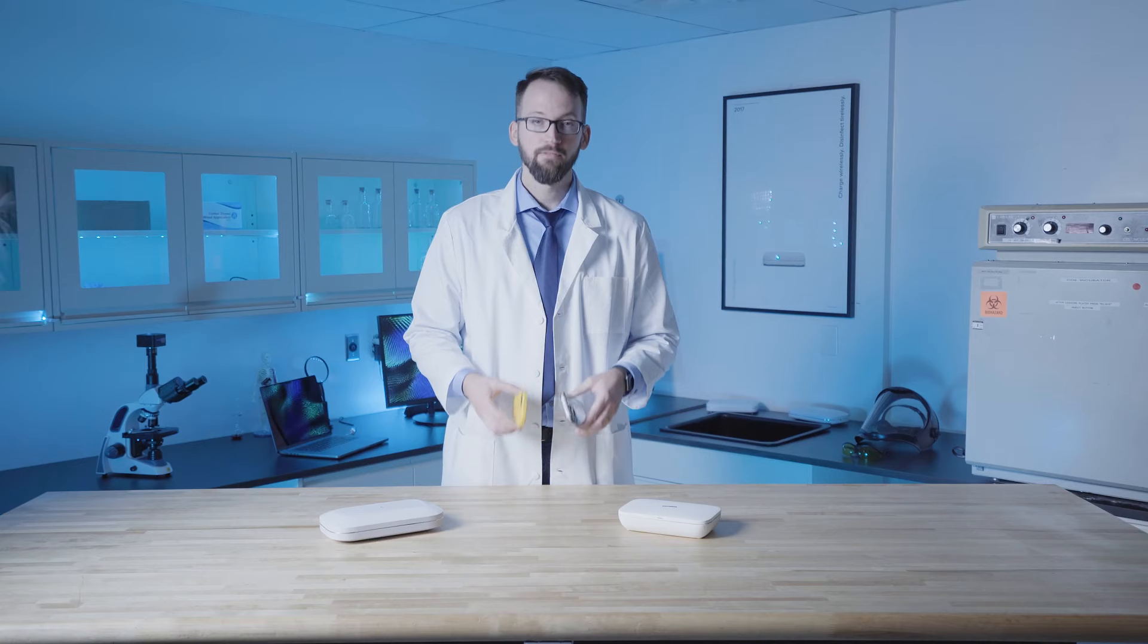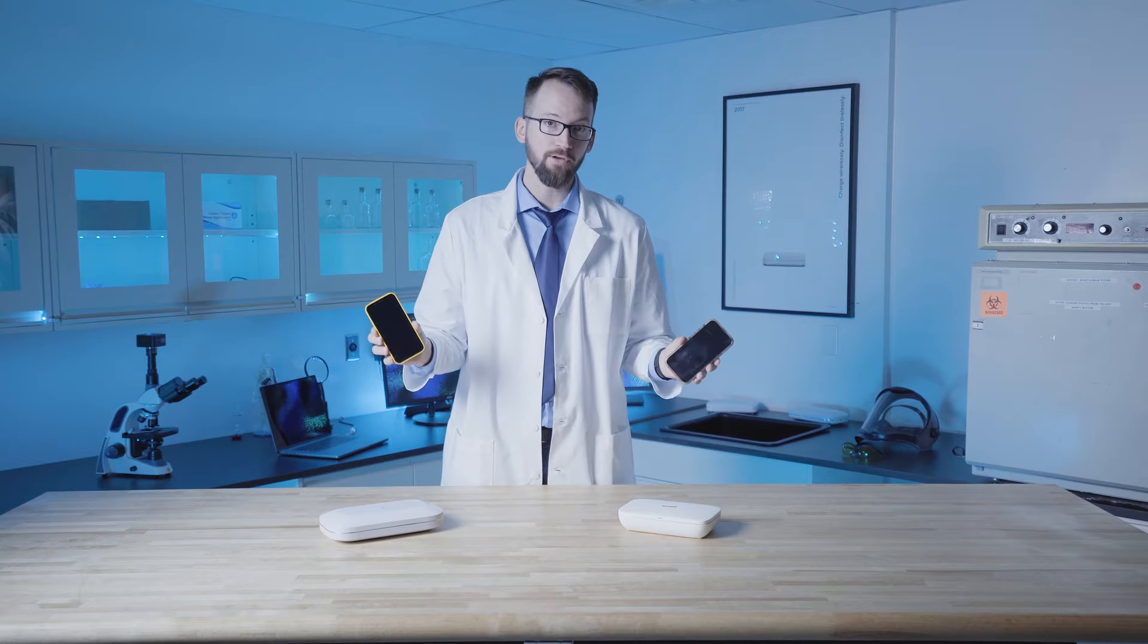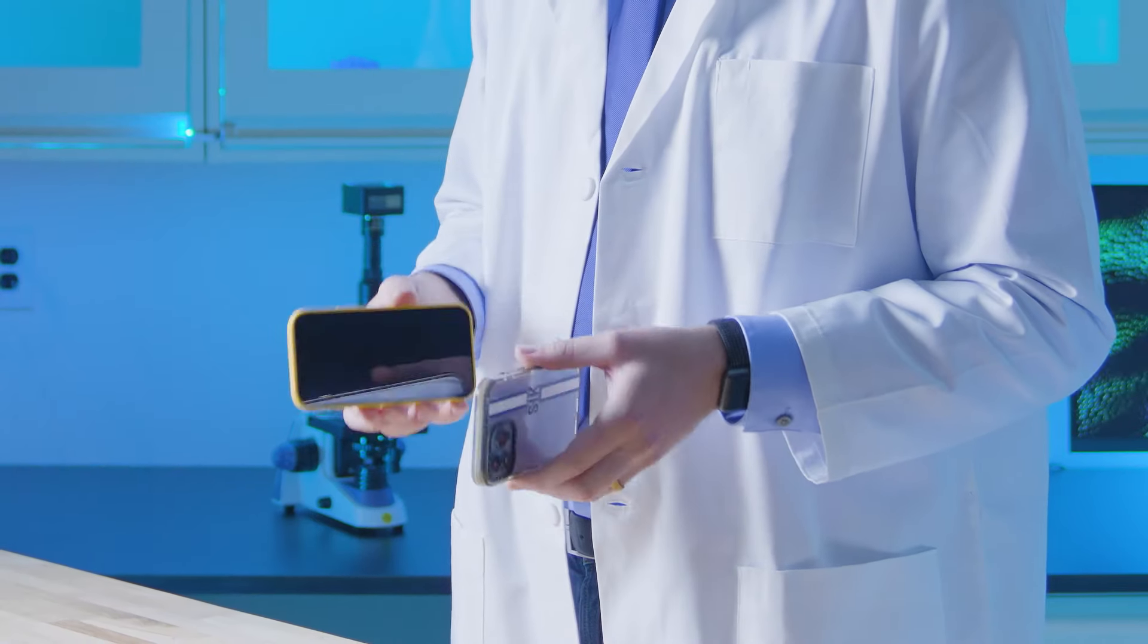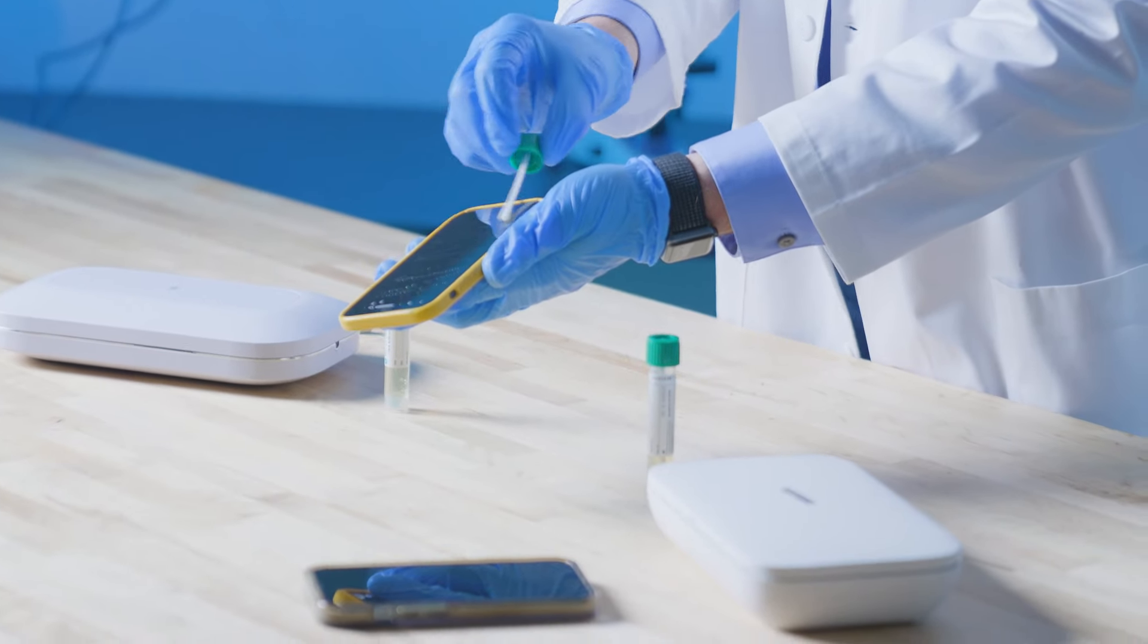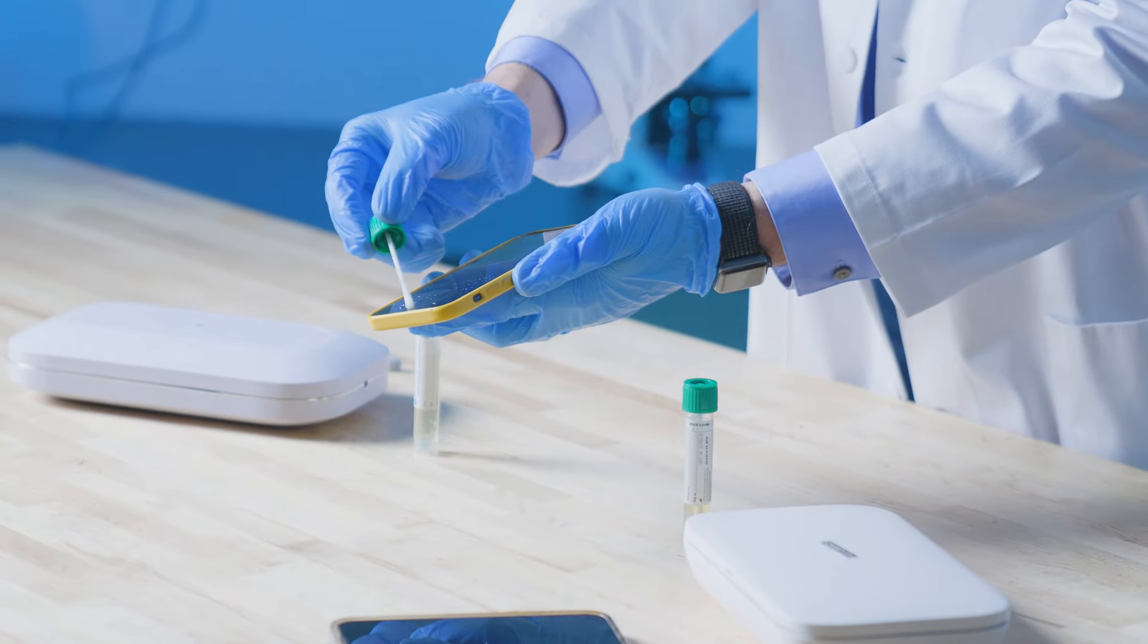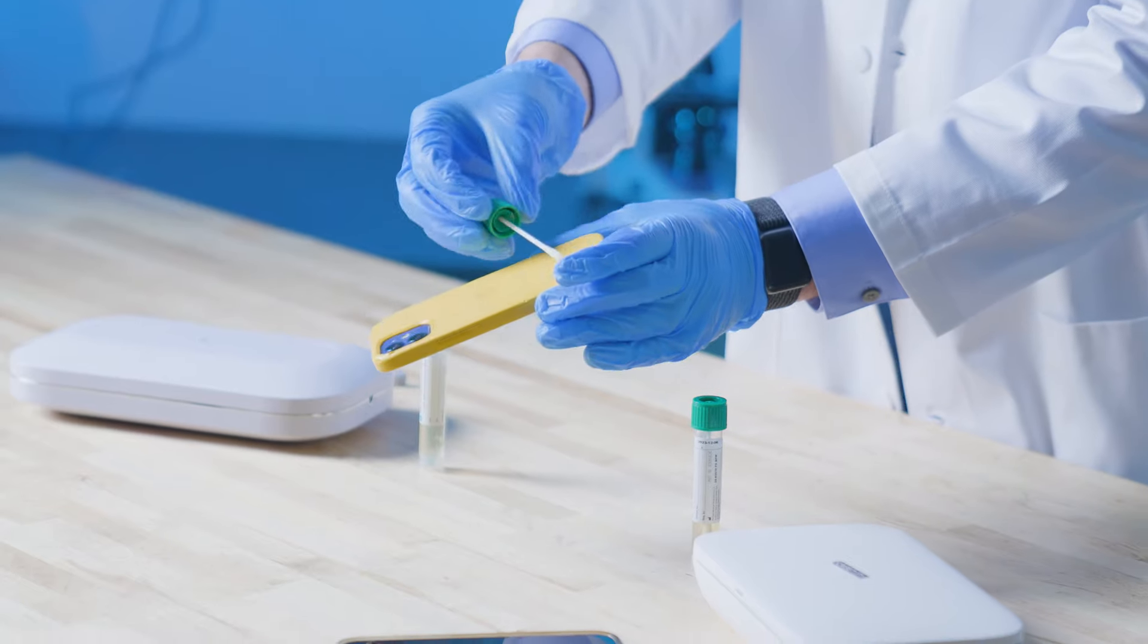For the first test, we're going to swab two phones, before and after, to see what kind of stuff we can find growing on it. Swab it on the screen, especially around the ear, then swab it on the back.